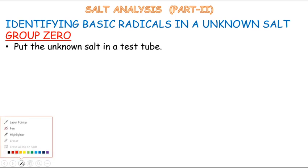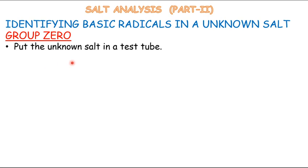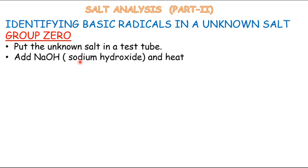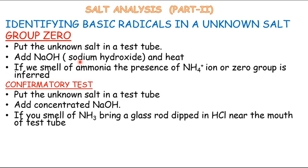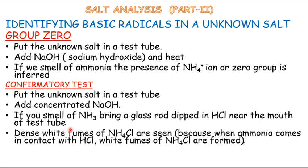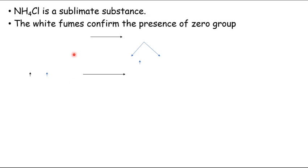First and foremost, we will take group zero. We take an unknown salt and in order to confirm the presence of group zero, we put sodium hydroxide in the unknown salt and heat it. If we smell ammonia, the presence of ammonium ion or group zero is inferred. For the confirmatory test, we bring a glass rod dipped in HCl near the mouth of the test tube. We observe dense white fumes of ammonium chloride, which confirm the presence of group zero.